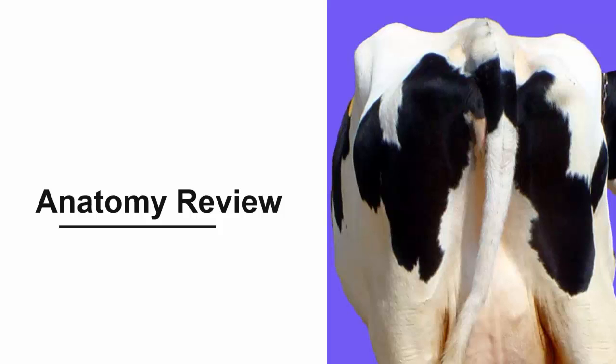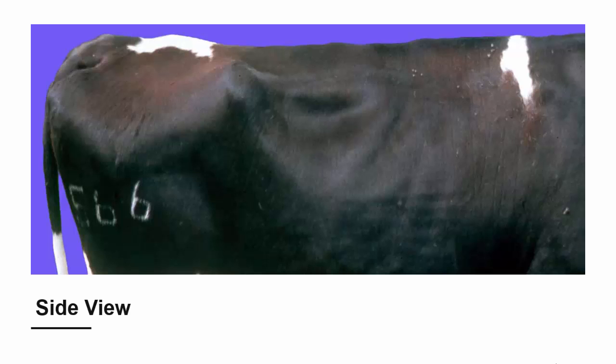Before we learn the scoring process, let's review the anatomical areas that are evaluated when assigning body condition scores. For dairy cows, we focus on the pelvic area and the loin. When viewed from the side, we will evaluate the visibility of the hooks, the pins, the thurl, and the short ribs.